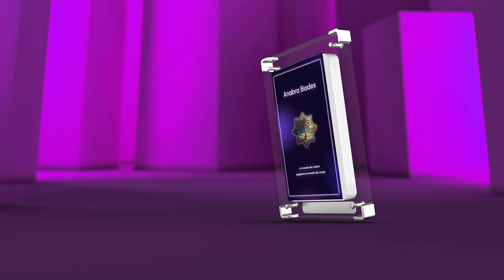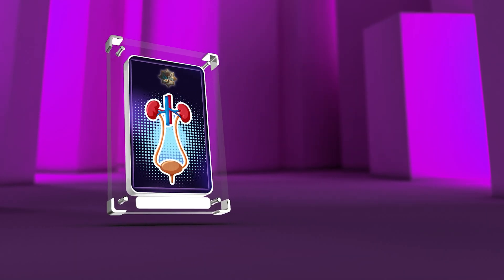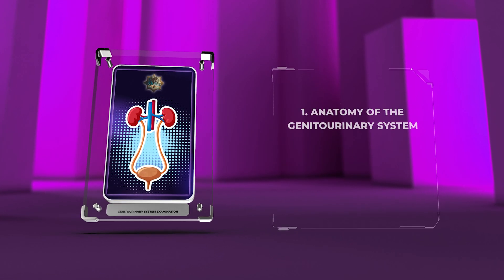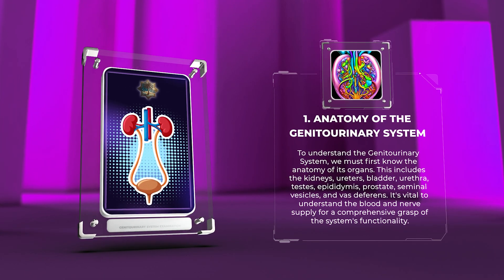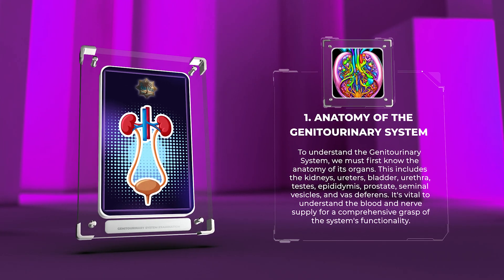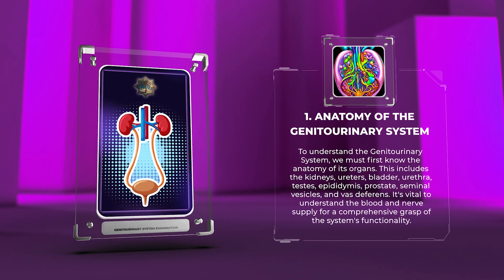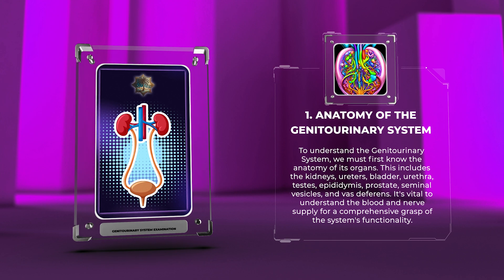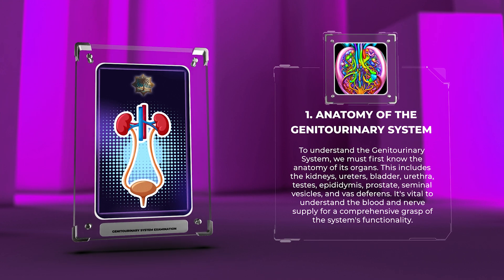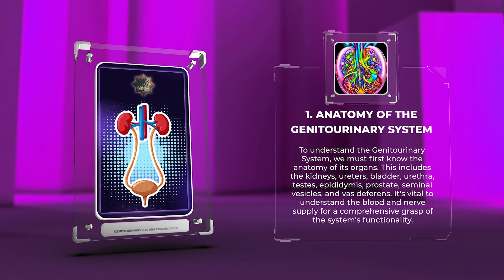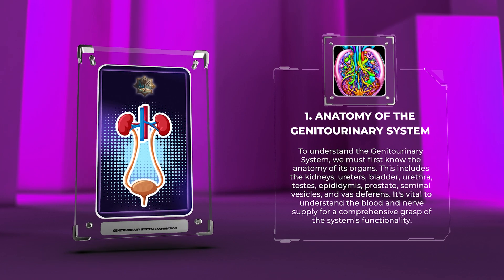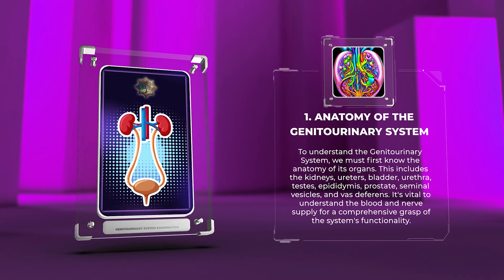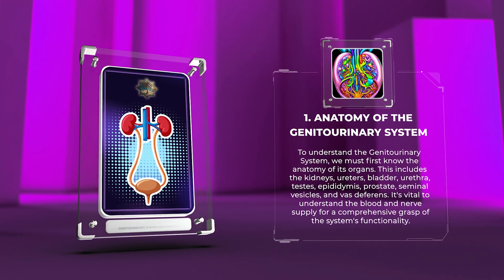To understand the genitourinary system, we must first know the anatomy of its organs. This includes the kidneys, ureters, bladder, urethra, testes, epididymis, prostate, seminal vesicles, and vas deferens. It is vital to understand the blood and nerve supply for a comprehensive grasp of the system's functionality.